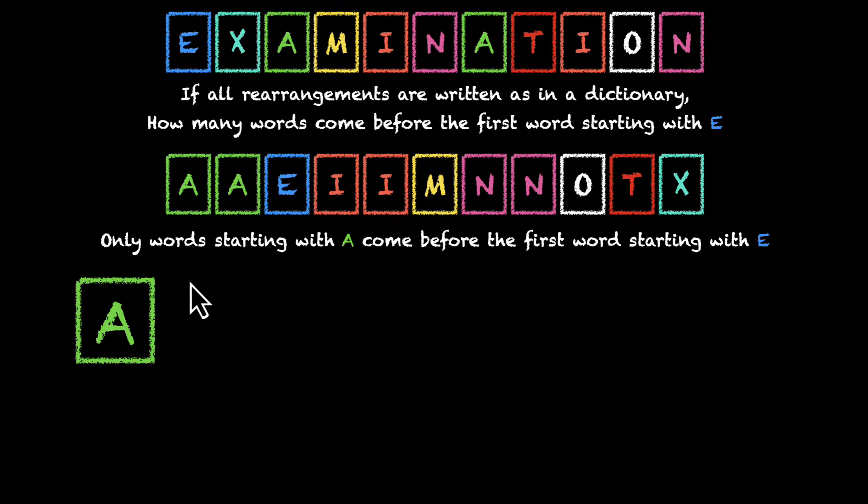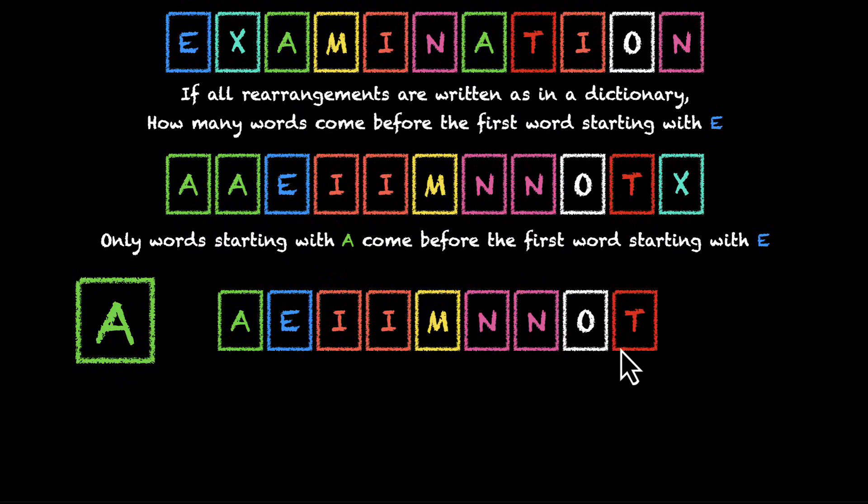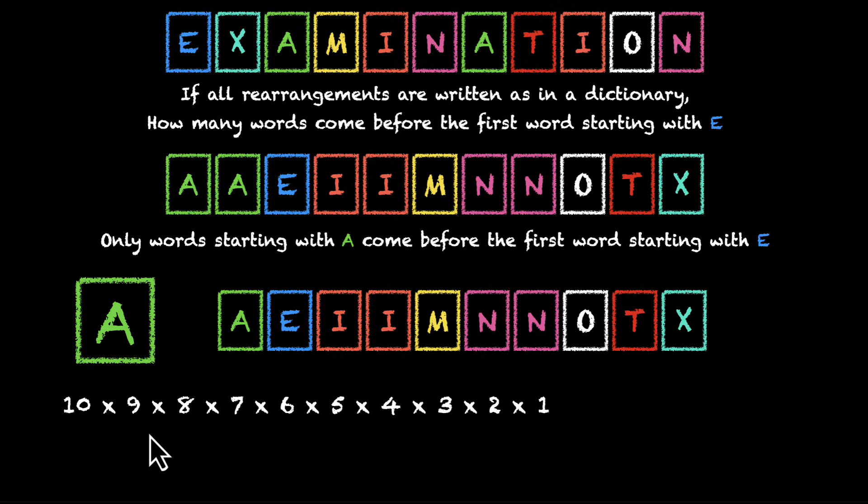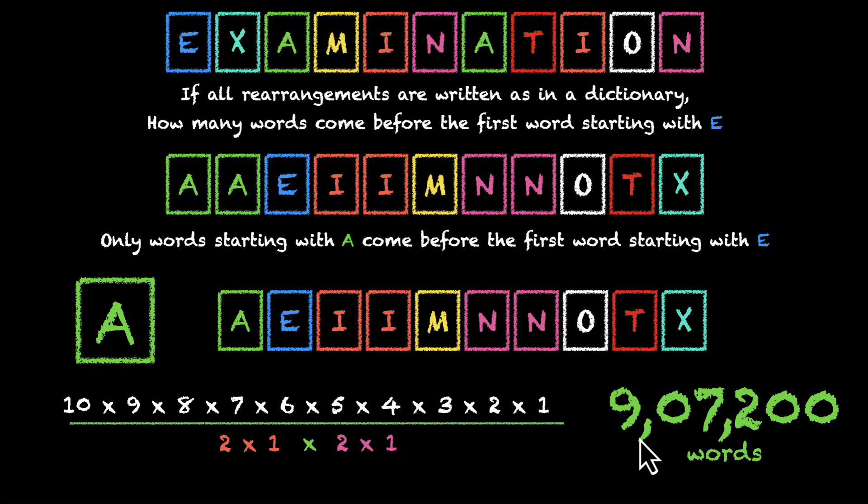So let's do that. If you freeze one of these A's, what are the leftovers? We have A, E, I, I, M, N, N, O, T, X. How many ways to rearrange them? There are 10 different letters, so that's 10 times 9 times 8 times 7 times 6 times 5 times 4 times 3 times 2 times 1. Then we'll make room for correction: we have two I's and two N's, so divide by 2, divide by 2. And if you simplify, you'll get some 9 lakh words, approximately. So there are roughly 9 lakh words that begin with A when we are rearranging the letters of the word examination.